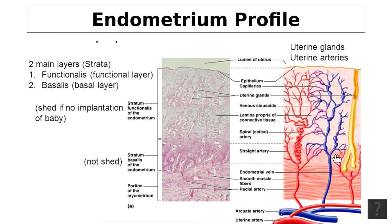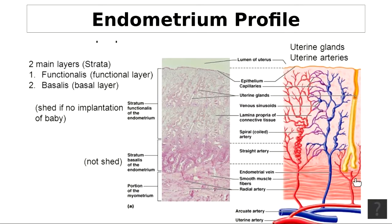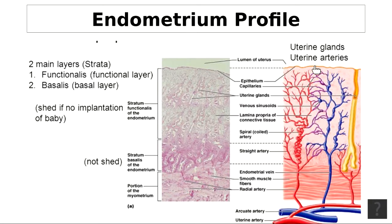Underneath is the stratum basalis — B-A-S-A-L-I-S — which is permanent and stays in place. It produces or forms the stratum functionalis every month. The stratum functionalis is shed during menstrual flow when no egg is implanted, and a new fresh lining is built up every month. The endometrium is the site of menstruation, implantation of a zygote, and fetal development during pregnancy.